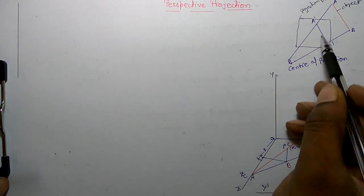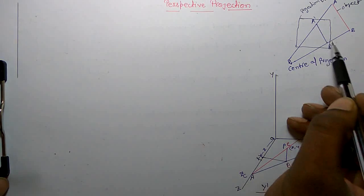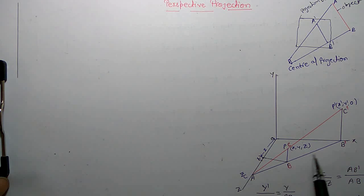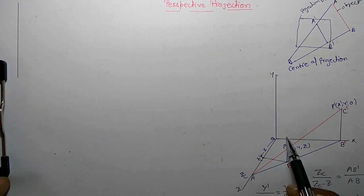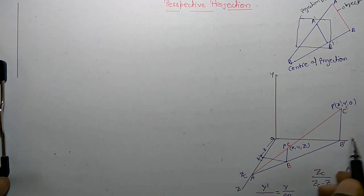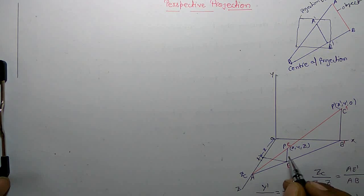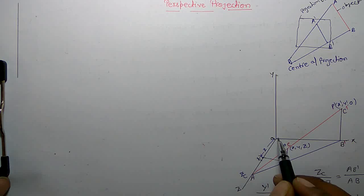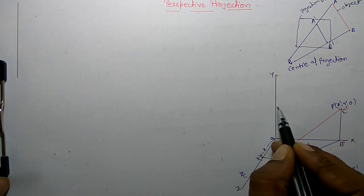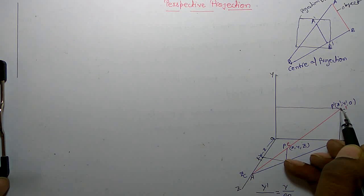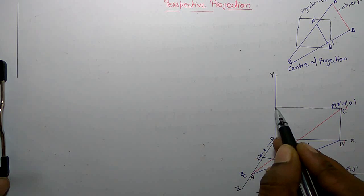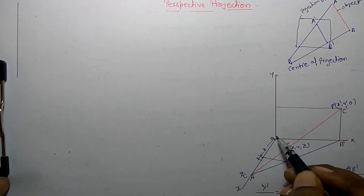So how can we find the next dimension of the projected image or projected object? Here we have taken three dimensions — x-axis, y-axis, and z-axis — and BC is the object. It is going to be projected on a plane which is perpendicular to the z-axis. This is the plane, and this plane is perpendicular to the z-axis.